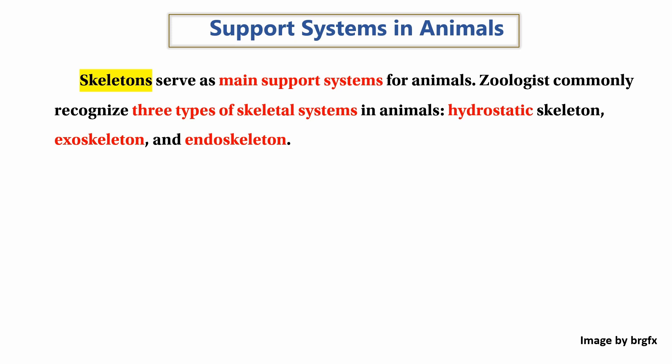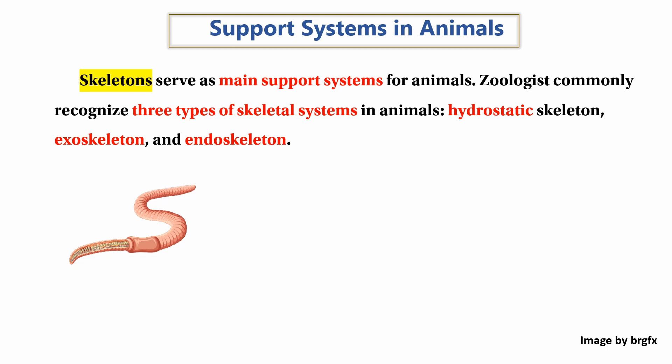The first type is the hydrostatic skeleton. The hydrostatic skeleton is found in lower forms of animals.